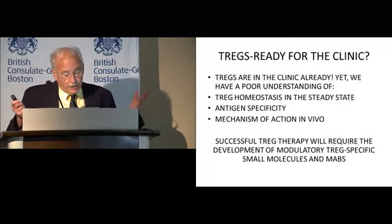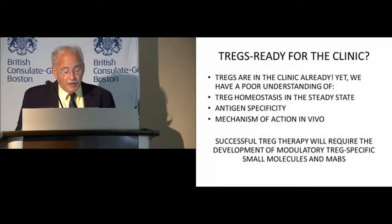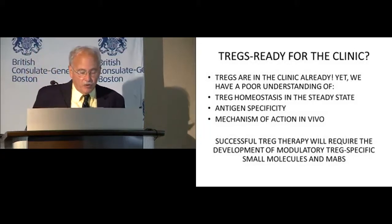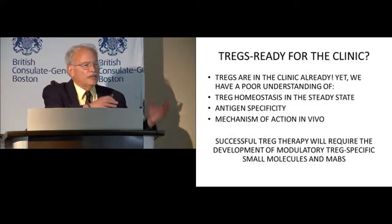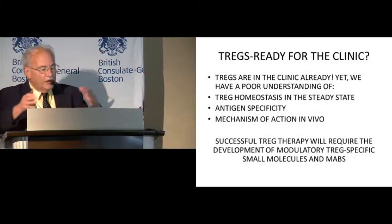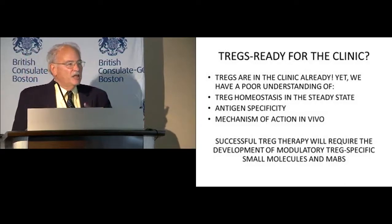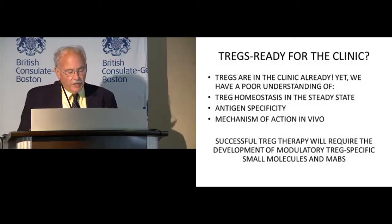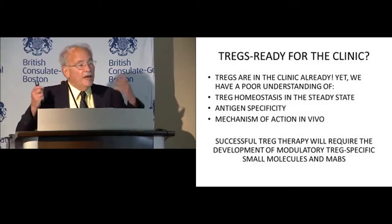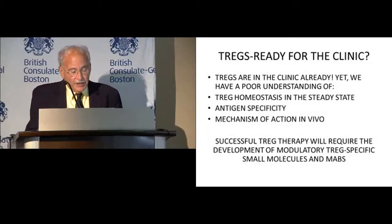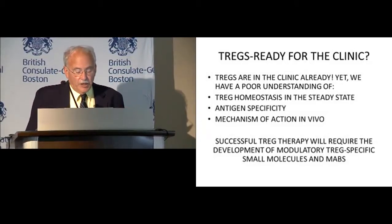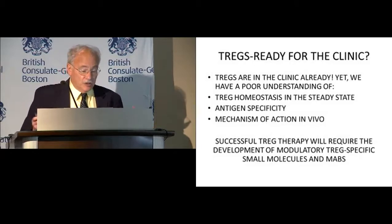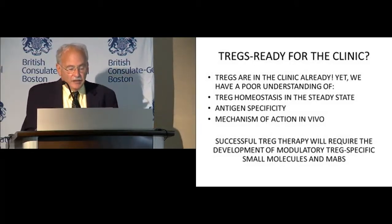To sum up: Tregs are already in the clinic. The problem is we don't understand Treg homeostasis — we have two populations, one proliferating and one not, and we don't know what controls the transition between them. The issue of antigen specificity is unresolved — it's very hard to get antigen-specific cells, so we're resorting to polyclonal cells. We need to know what mechanism these cells are actually using. My own bias is that we really have to develop modulatory Treg-specific antibodies and potentially small molecules to manipulate Treg function positively or negatively.